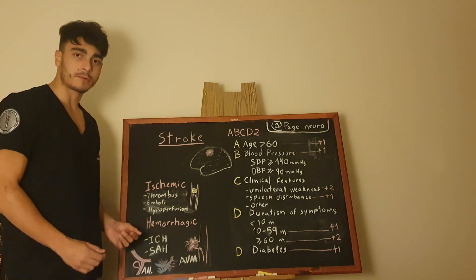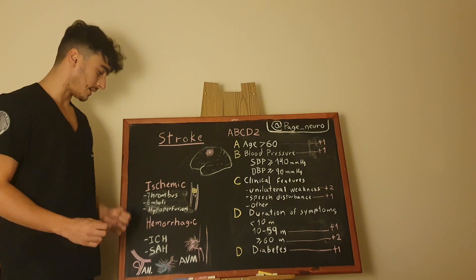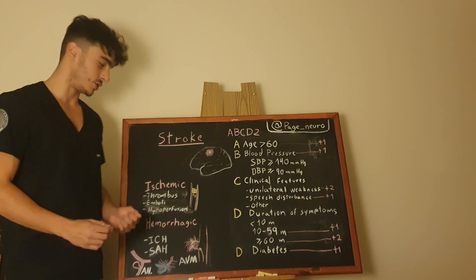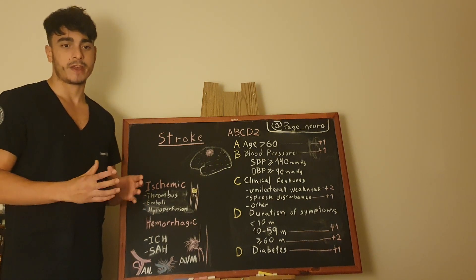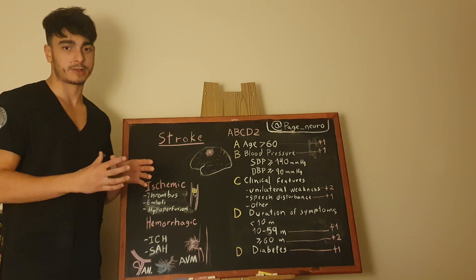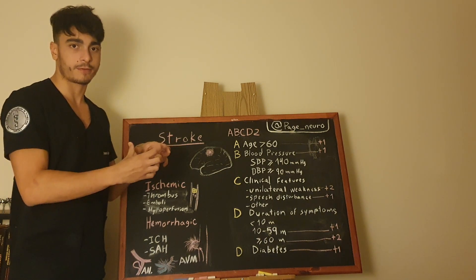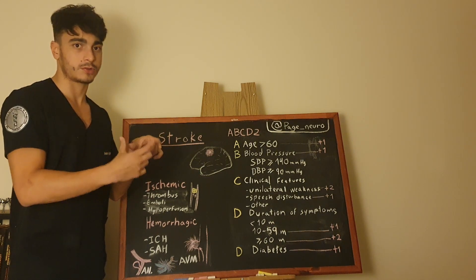Now, talking about the hemorrhagic one, the two main types of it are ICH, intracerebral hemorrhage, and SAH, subarachnoid hemorrhage. ICH stands for intracerebral hemorrhage, that means actually that the brain parenchyma itself is suffering focally, but there's a hemorrhage in it, so it's bleeding.